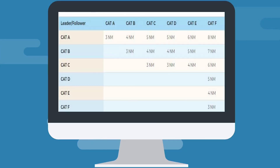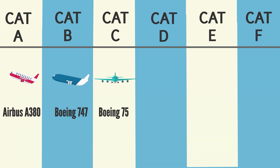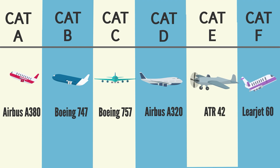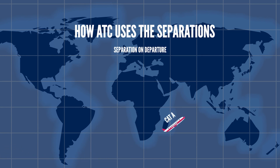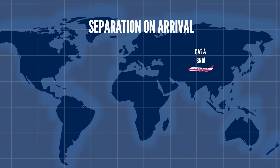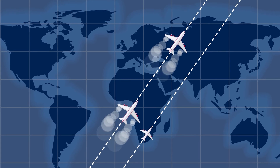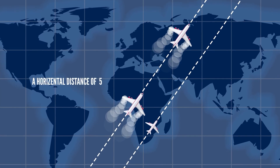Today, aircraft are reassigned to one of six new RECAT categories — A through F — derived by redefining the transition weight between the old categories, adding a super category, and splitting each medium and heavy category into two new ones. You can see the resulting categorization on the screen. In cruise, the separation is fixed for all types: a horizontal distance of 5 nautical miles between leader and follower, and a vertical separation of 1,000 feet.